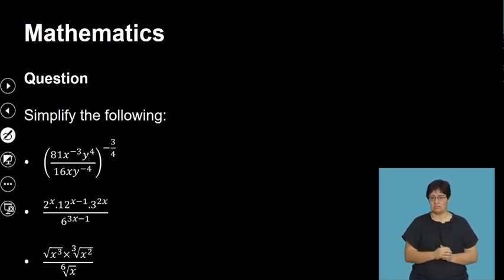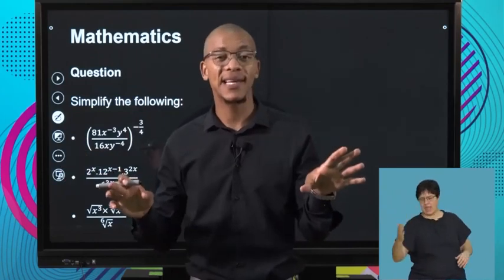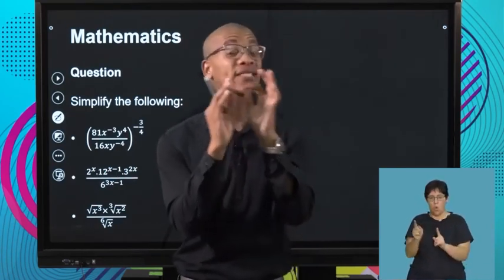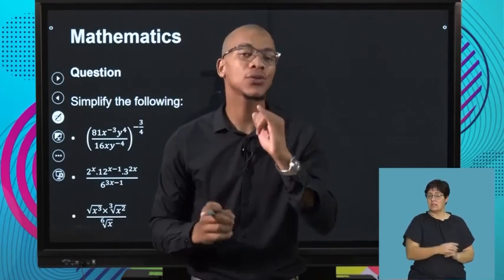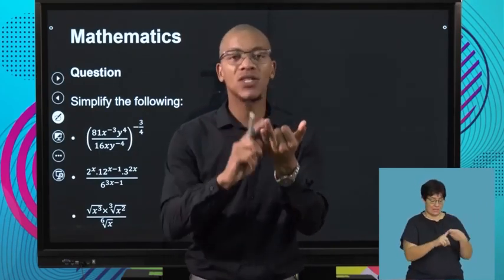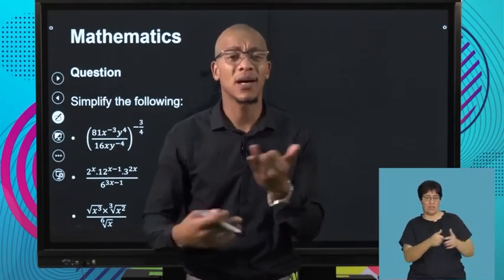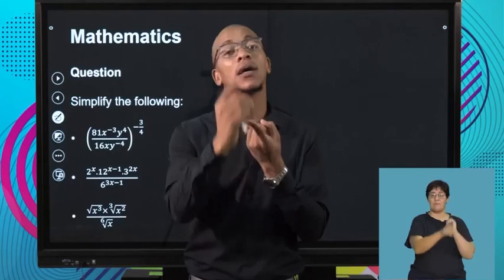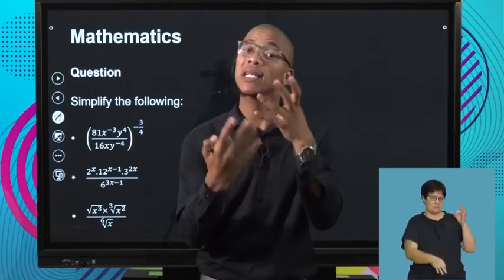The first question is: simplify the following. Please understand something — when it says simplify, you will have an equal sign and then simplify the expression. Simplifying means making sure there is no common factor remaining. Use your highest common factor. Make sure the exponents are in the simplest form they can be in. Lastly, make sure your exponents are positive numbers at the end. Those are the conditions of simplifying.